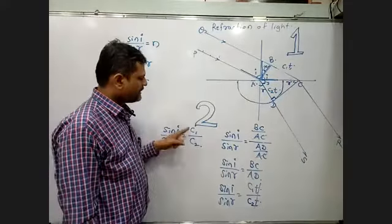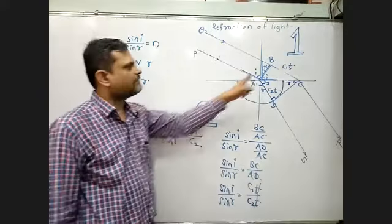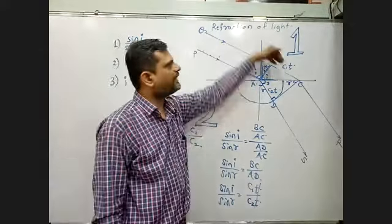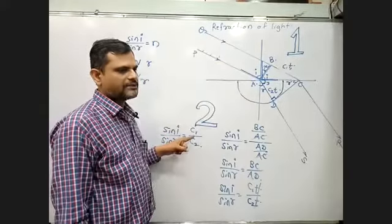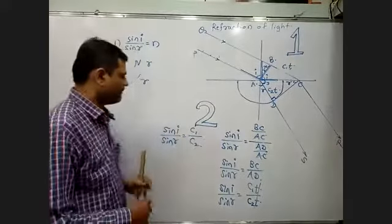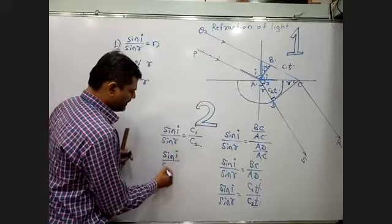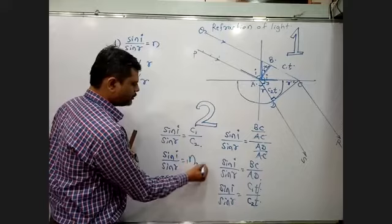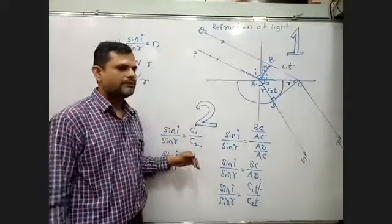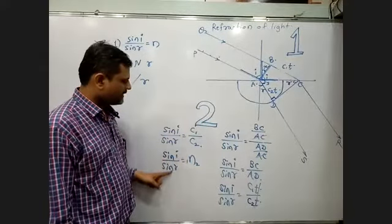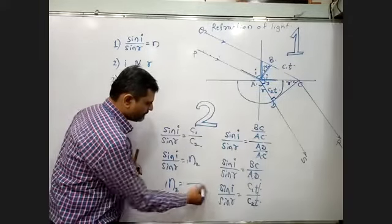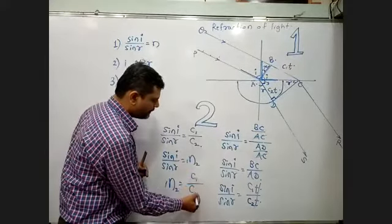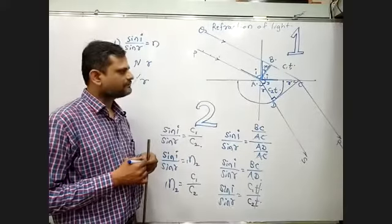This ratio c1/c2 is a constant because c1 is the fixed speed of light in the first medium and c2 is the fixed speed of light in the second medium. No matter how much we increase or decrease the angle of incidence, this ratio remains constant as long as the media do not change. This ratio is called the refractive index. So sine i / sine r = 1n2, which is the refractive index of medium 2 with respect to medium 1. Also, 1n2 = c1/c2.